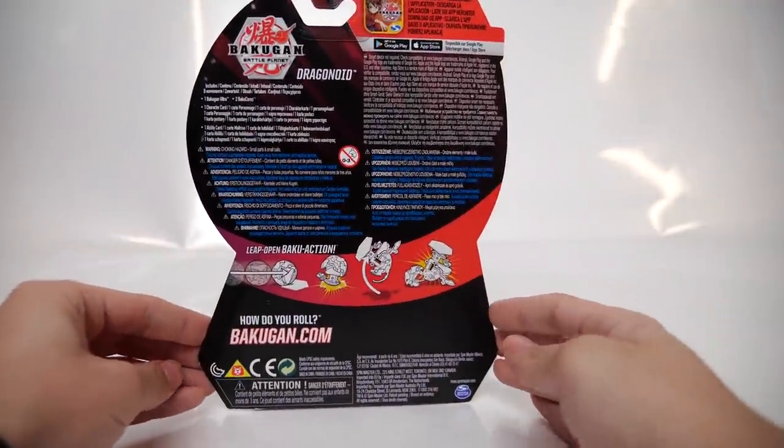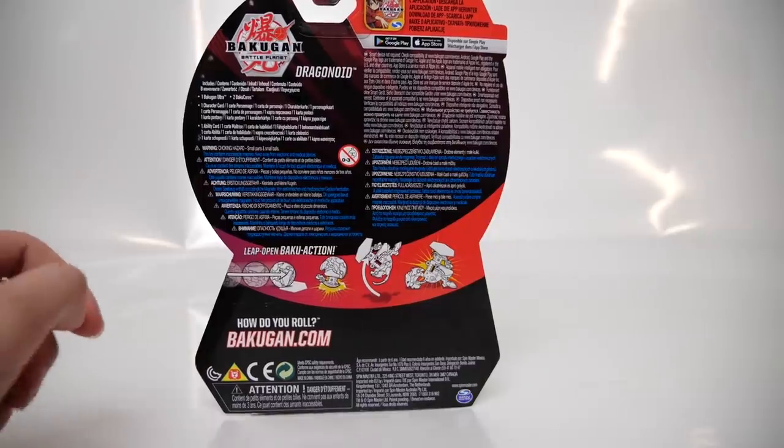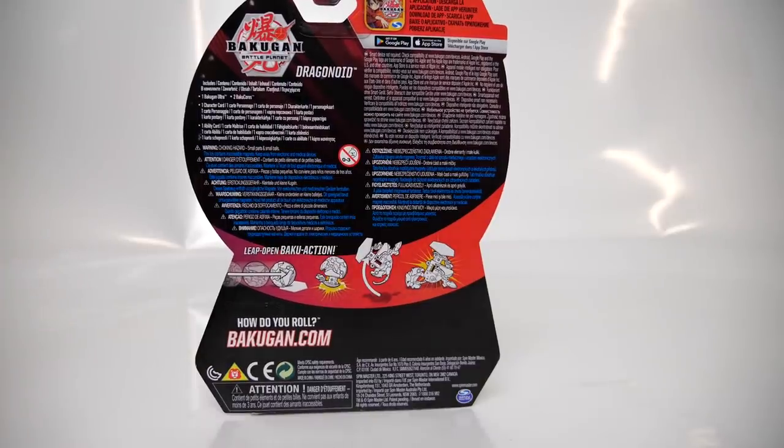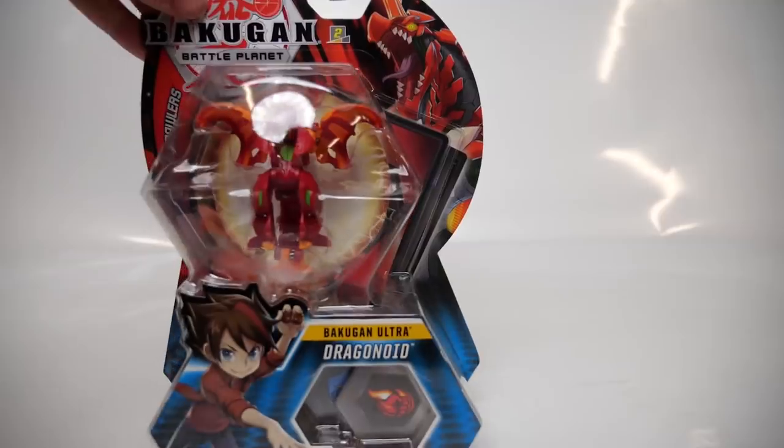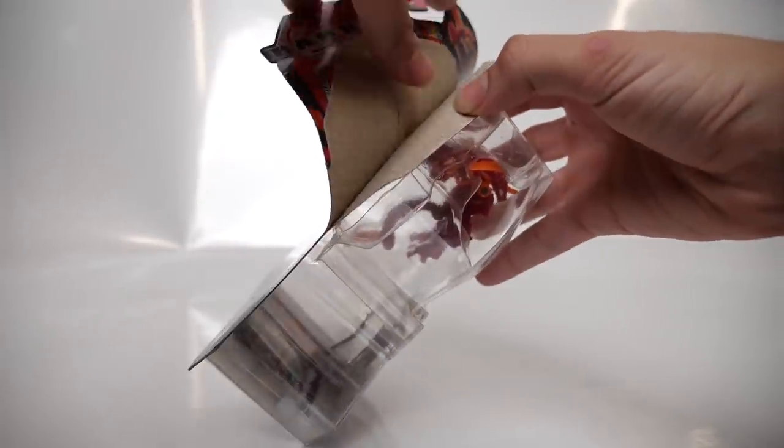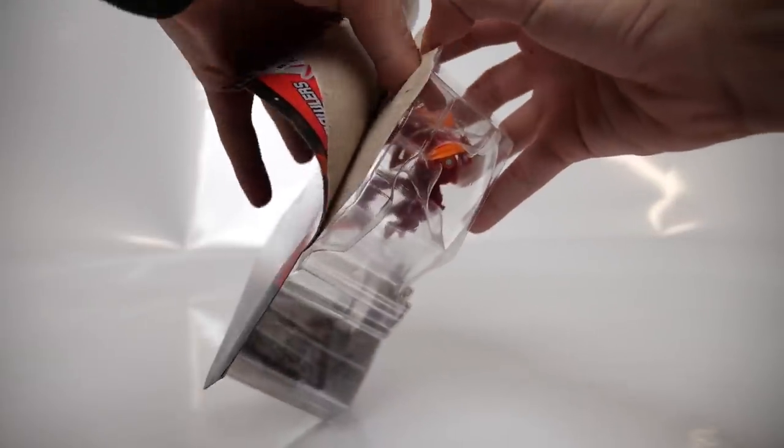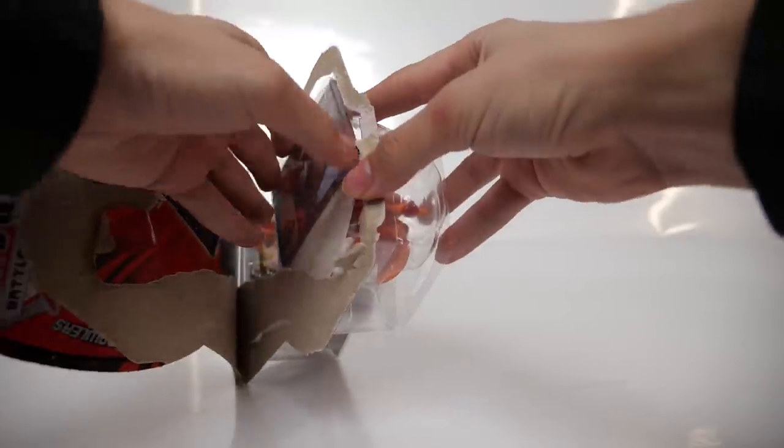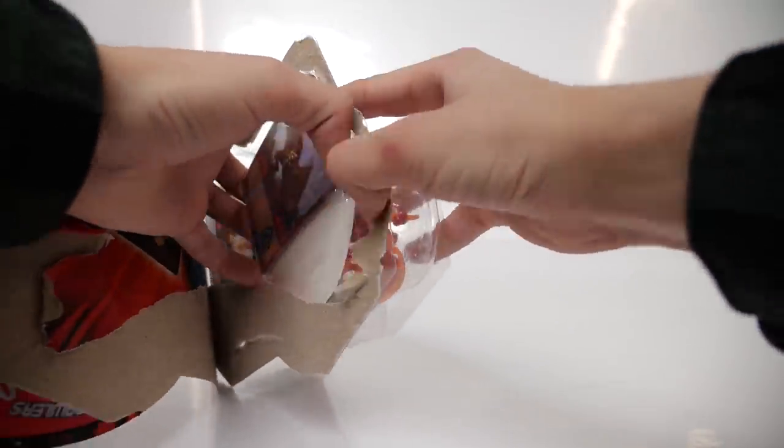On the back you can see that he has the leap open Baku action, as he is a Bakugan Ultra. So let's not wait any longer. I certainly can't. I have never had my hands on a true, proper Dragonoid Ultra before, and I cannot wait to see what it's like to hold him. Let's take this guy out of the box right here.